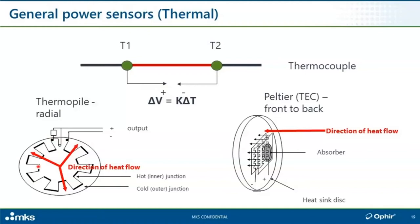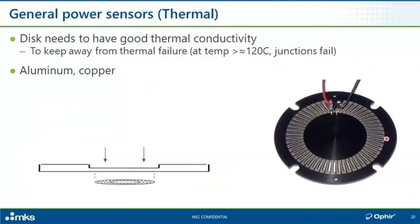One configuration is the radial configuration; all of this is hidden behind the front mechanical flange of the sensor body — only the active aperture is visible. The other configuration is an axial configuration where the heat flows front to back — these are more sensitive sensors, going down to maybe 10 microwatts. It's more sensitive but a little bit slower. Everything has its pluses and its minuses.